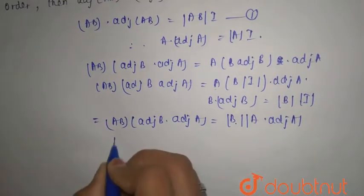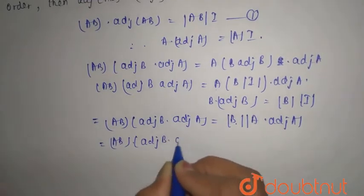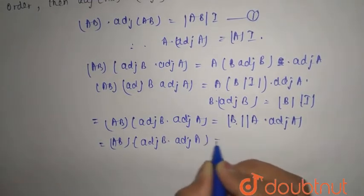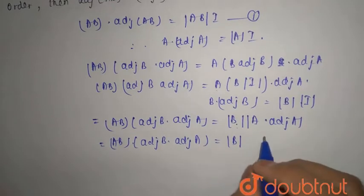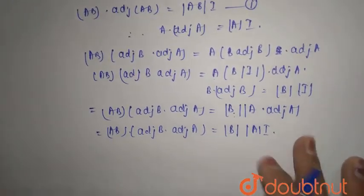So here you have AB into adjoint of B into adjoint of A equals mod of B as it is. This again can be written as mod of A into identity matrix.